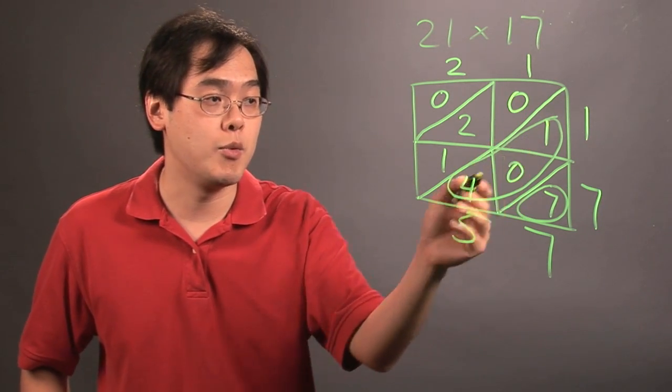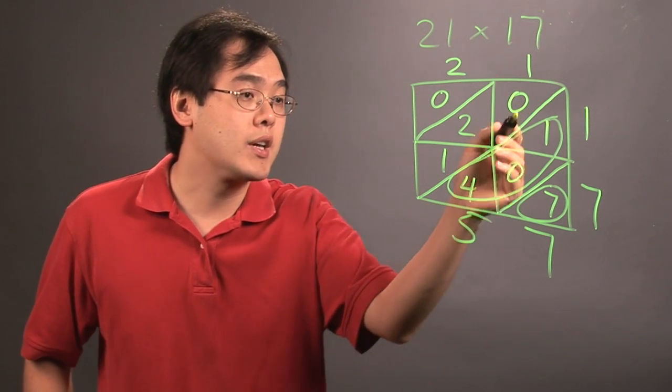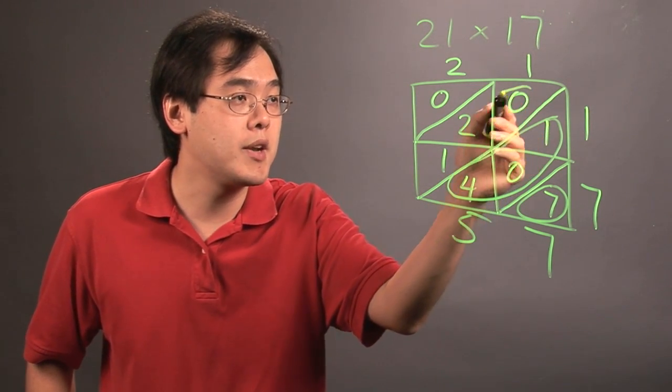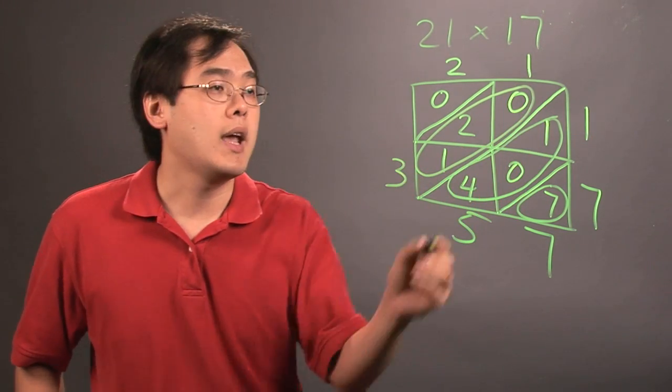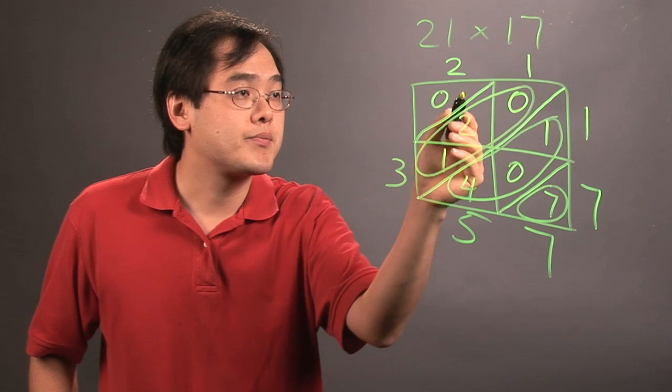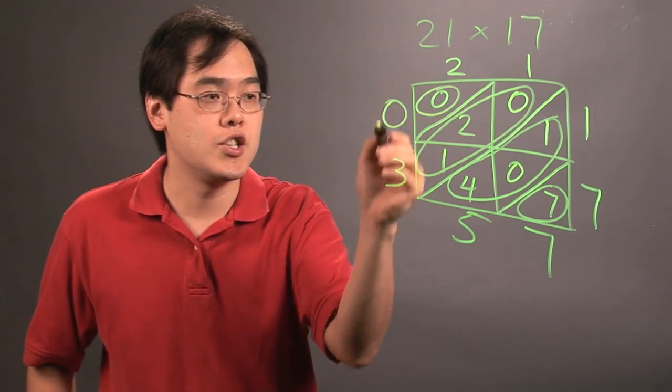So but in this case, because the number we have is less than ten, you wouldn't have to worry about that here. Now, we're going to continue by adding the numbers along this diagonal, zero plus two plus one, which is going to be three. And then lastly, over here, when you add this number, obviously that's just a zero.